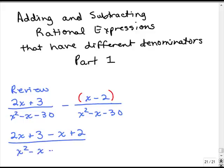The next thing to do is to simplify the numerator. So if we just combine like terms, that gives us x plus 5 over x squared minus x minus 30.